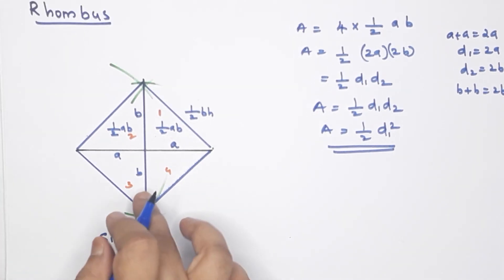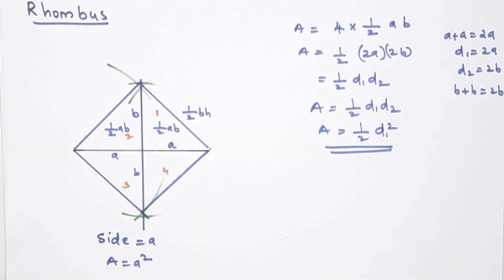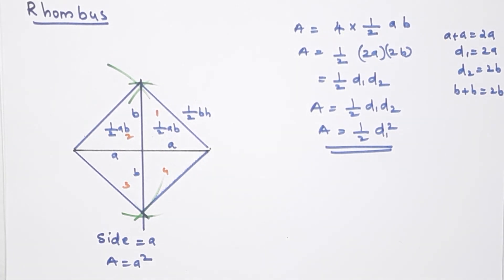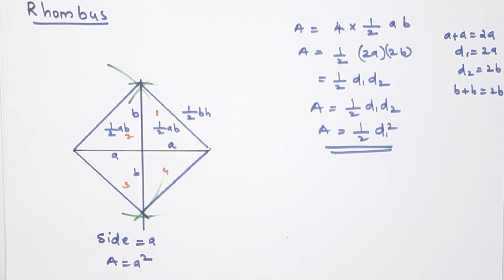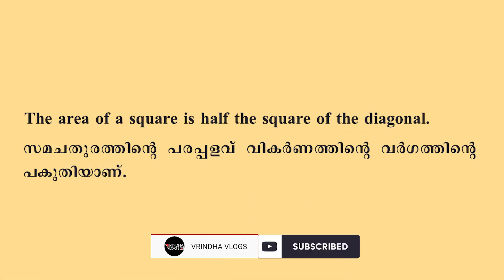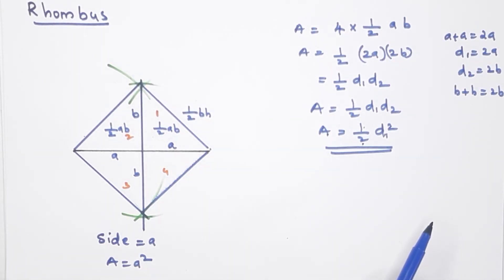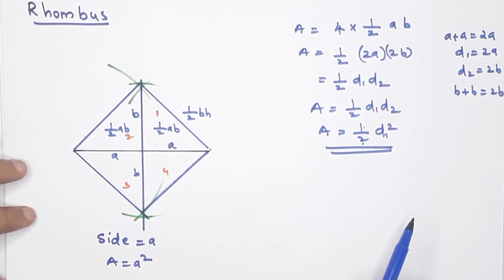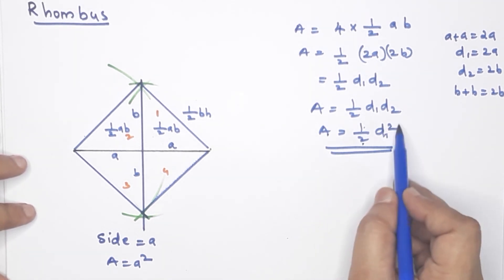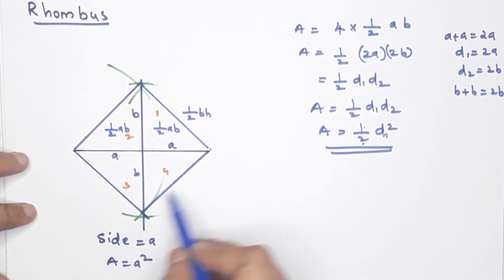For a square, the two diagonals are equal, so D1 equals D2. If you find this diagonal, we find the area as half D1 squared. The area of a square is half the square of its diagonal.